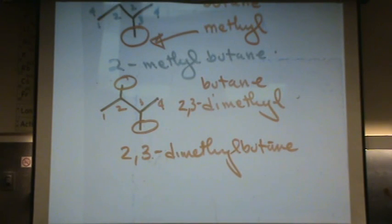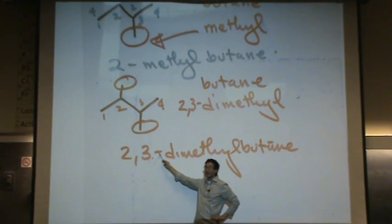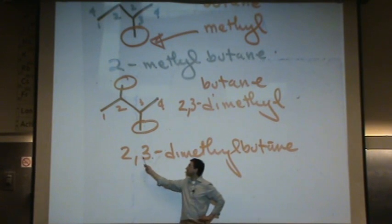So you have to have the di and the two, three. So this would be called two comma three dash dimethylbutane. Or if you're saying that, you just say two, three dimethylbutane. So remember, numbers and letters separated by dashes. If you have more than one number, separate it by commas.